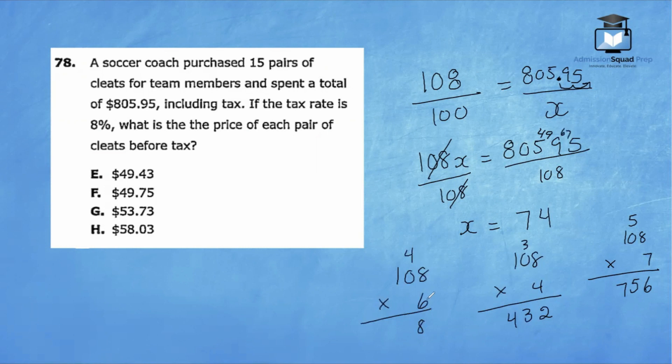And we need to identify the remainder, which is 67. So we can place 67 right over here. Now we need to identify how many times 108 can go into 675. Let's give six a try. 108 times six - six times eight is 48, six times zero is zero plus four is four, and six times one is six. So that's 648. So that's perfect. So we have 746. We still have a remainder of 27.